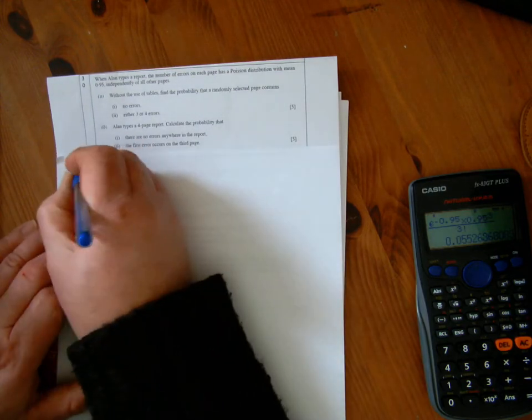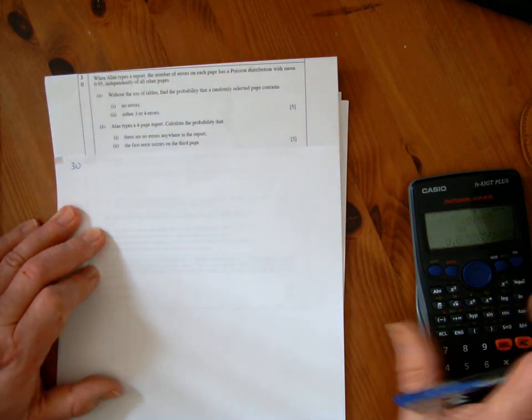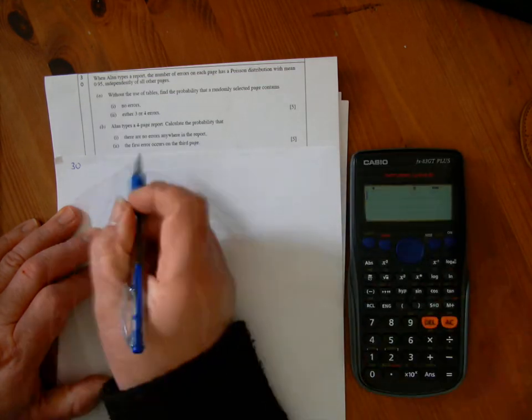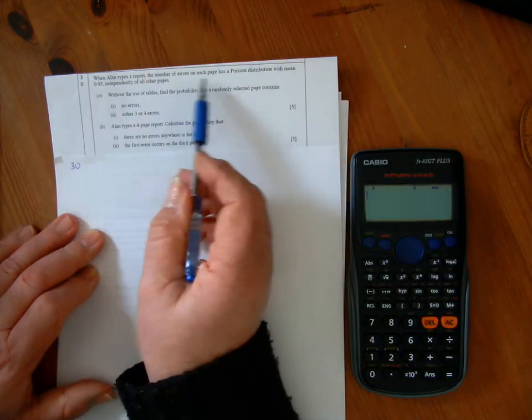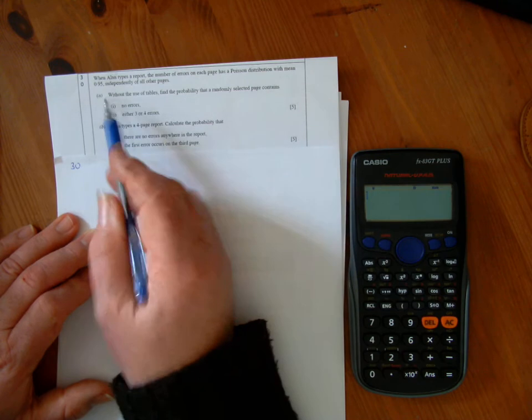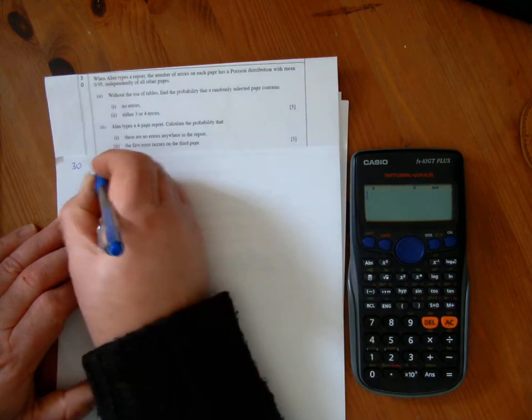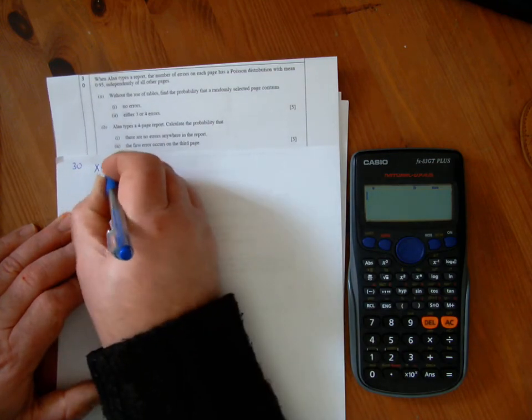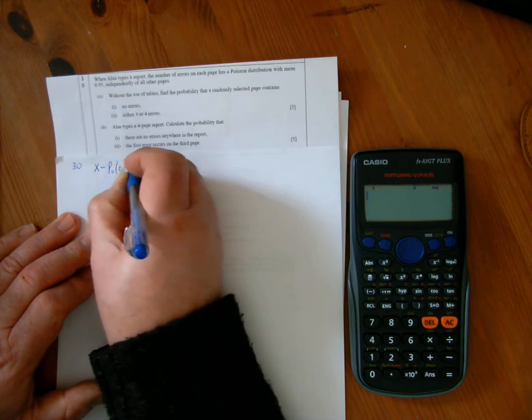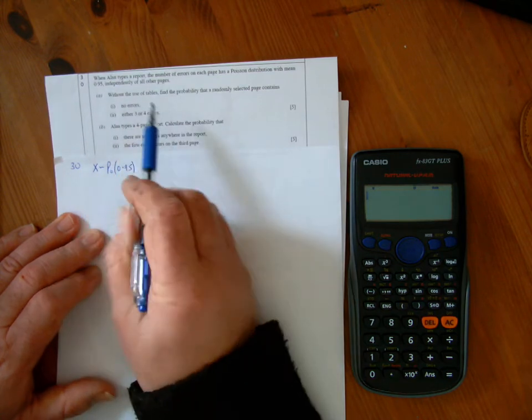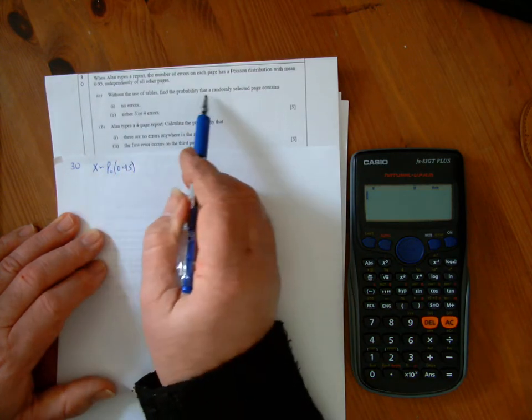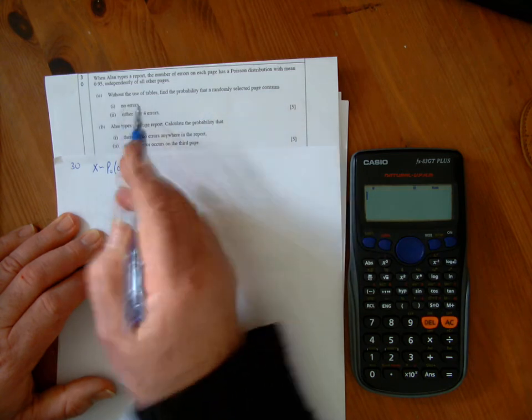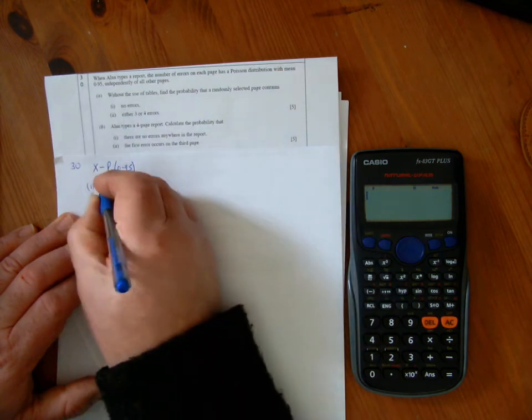Question 30. We've got a Poisson distribution with a mean of 0.95. Without use of tables, find the probability that a randomly selected page contains no errors.